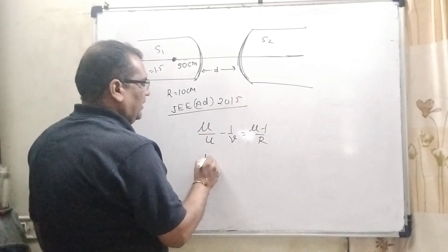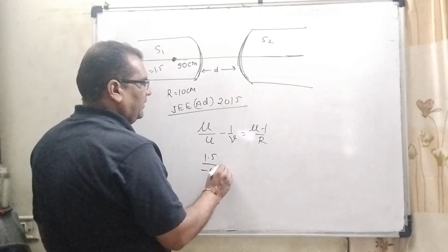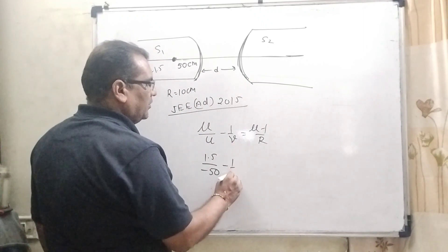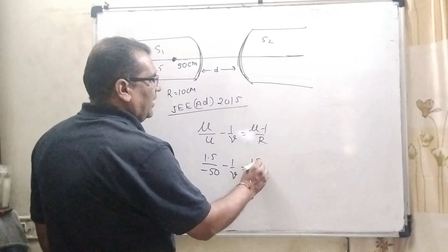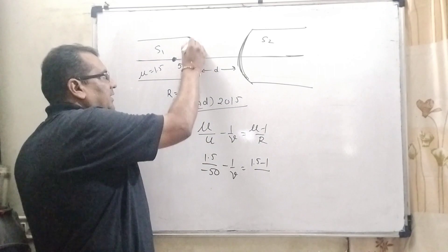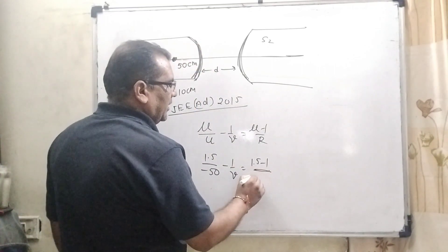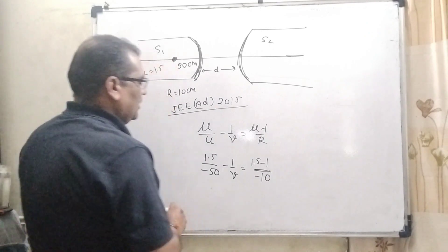Denser to rarer means μ/U - 1/V = (μ-1)/R. This formula is used for denser medium to rarer medium because object is placed inside this surface. So, μ is given 1.5. Here U is given, that is minus 50. And we have to find out V. 1.5 minus 1, and here R is negative.